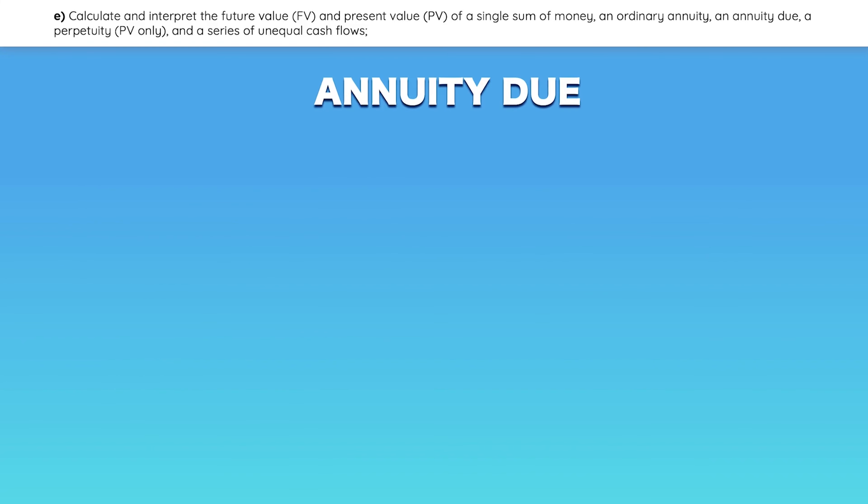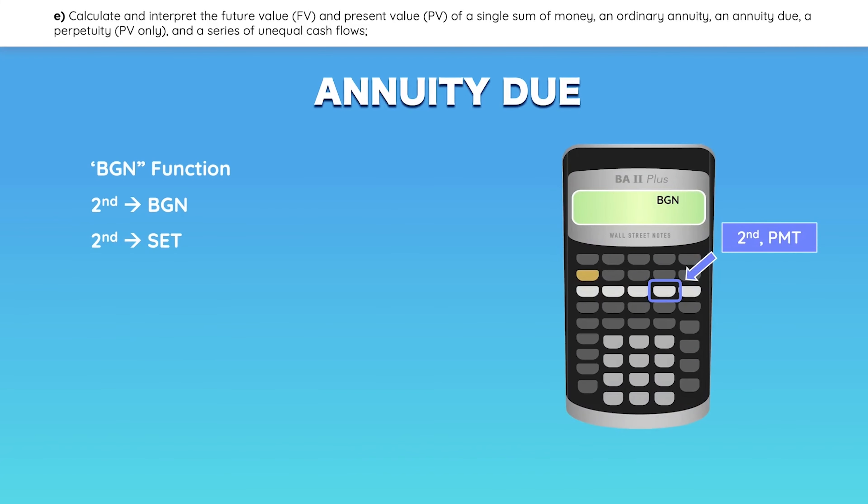The second way to solve an annuity due is by using the begin function on your calculator. With this function enabled, you can solve with the time value of money buttons as if it were a normal annuity, and the calculator will automatically compute values as an annuity due.